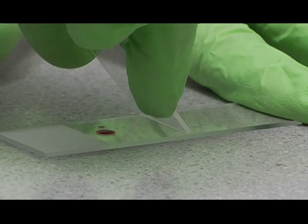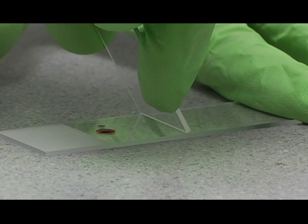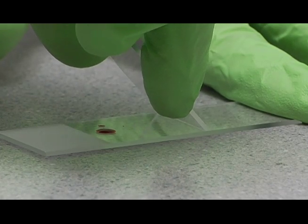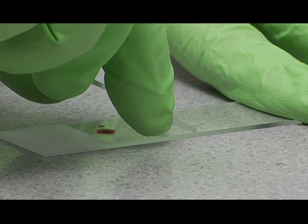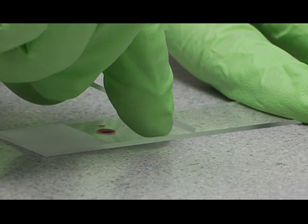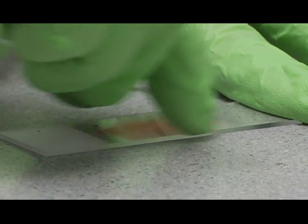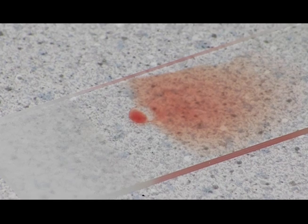Now your first slide was a little too thin. You can make it thicker by increasing the angle like this. If it was too thick, you can make it thinner by decreasing the angle like this. Then you back up to the drop, let it spread, and go forward.